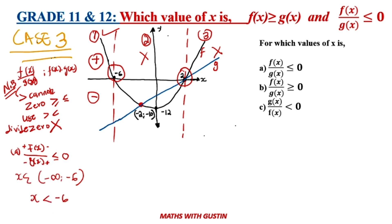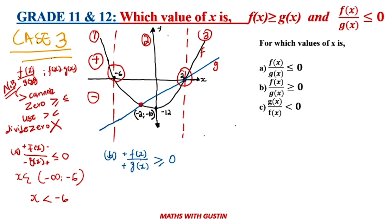Now let's move to Question B. It says: f of x over g of x is greater than or equal to zero. You are looking for a situation where f of x is positive and g of x is positive, or both are negative, because negative over negative gives a positive answer. Please go through Stage 1 and Stage 2 — take five seconds, then I will show you the answer.